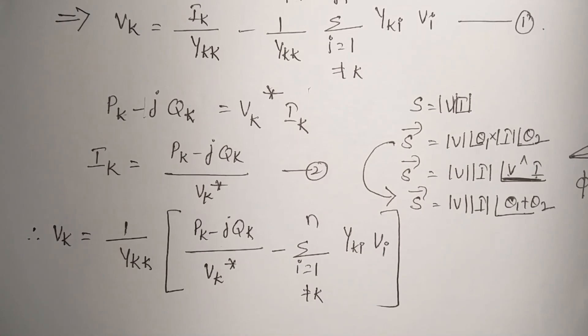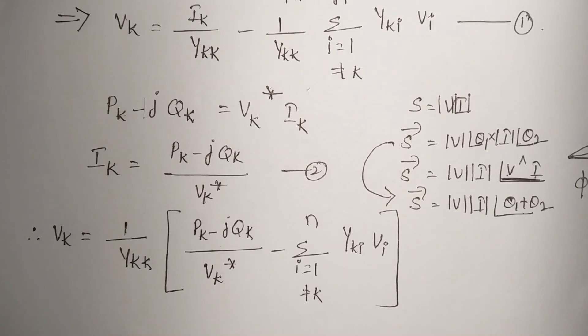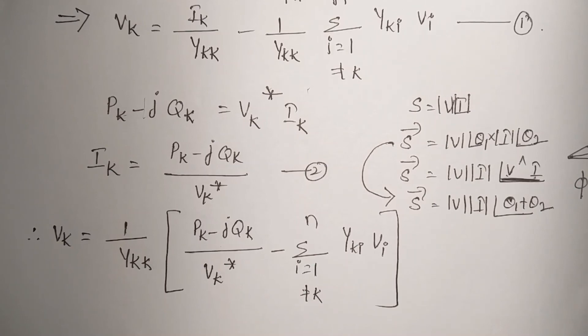This is how we form the load flow equations. With these equations we can calculate the voltage, we can calculate the power flows in the system. Based on these equations, we are going to solve the power system problem using different methods. Methods can be Gauss-Seidel, Newton-Raphson, fast decoupled, any of the methods. But the equations, that is load flow equations, will be the same. I hope you understand. Thank you so much.